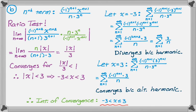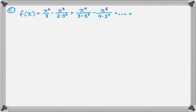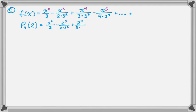That's our interval of convergence using the ratio test. For the final part, P4 is the fourth-degree Taylor polynomial for f about x equals zero, so we go up to the fourth degree — that means we use three terms, because cutting off at the third term gives x to the fourth. We want to use the alternating series error bound to find a bound for the difference between P4(2) and f(2).